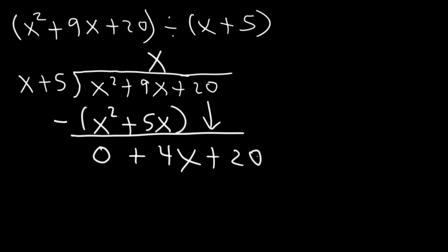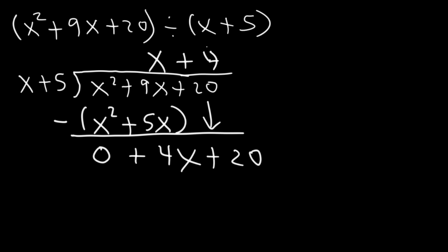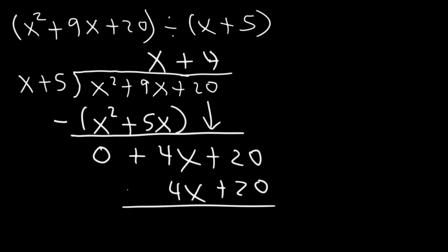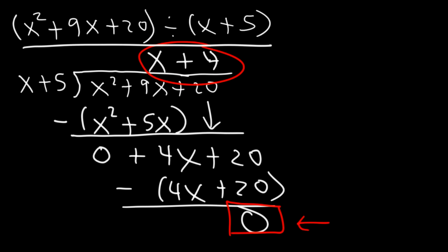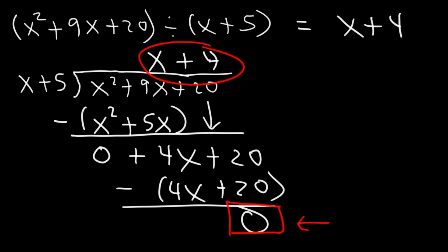We bring down the 20. Now we need to divide again — 4x divided by x gives us positive 4. Then we multiply: 4 times x is 4x and 4 times 5 is 20. Then we subtract, everything cancels, and our remainder is 0. The quotient is x plus 4. So x squared plus 9x plus 20 divided by x plus 5 equals x plus 4.